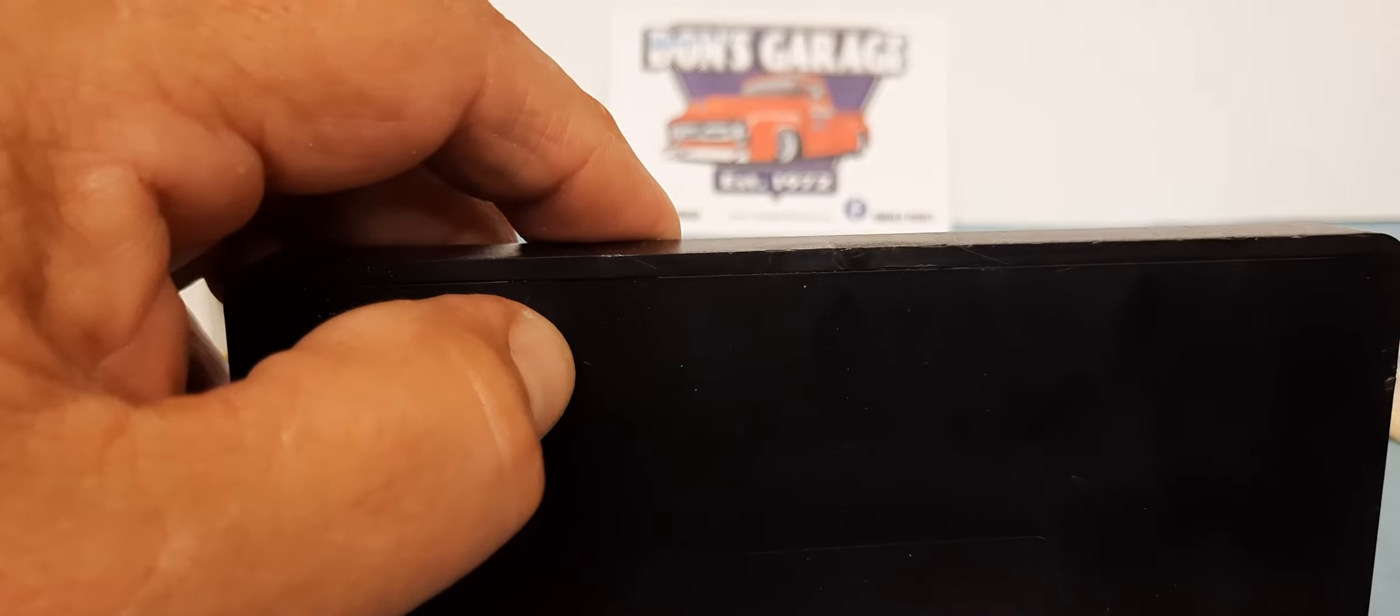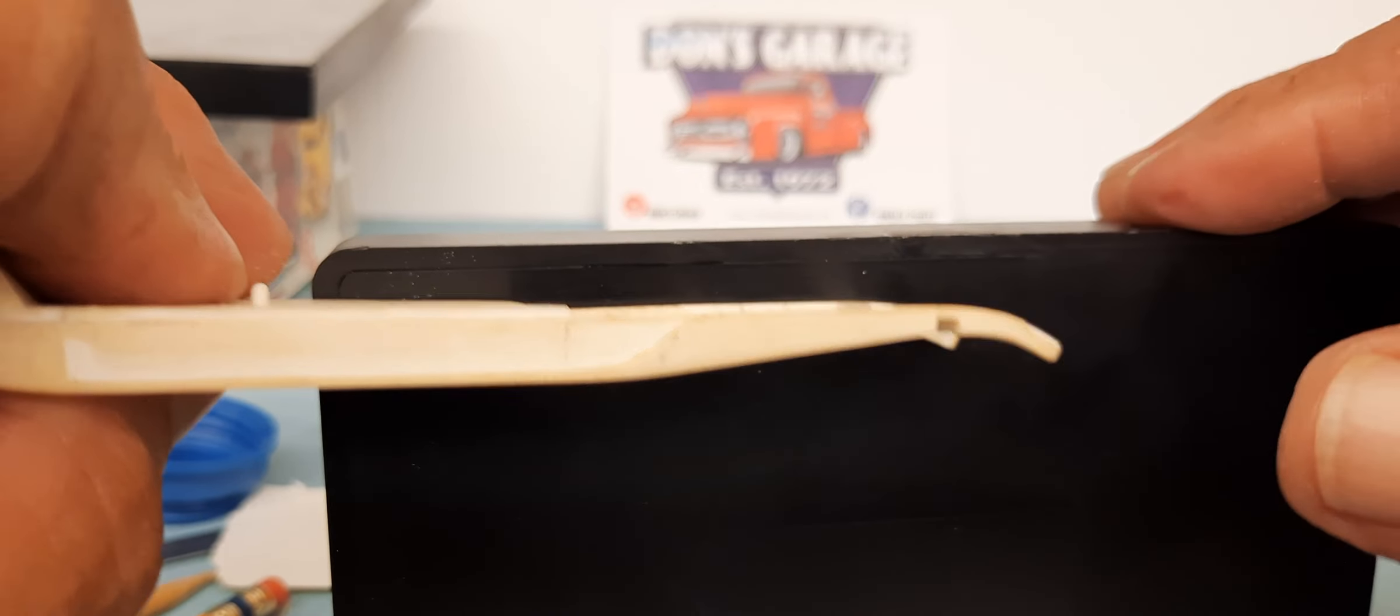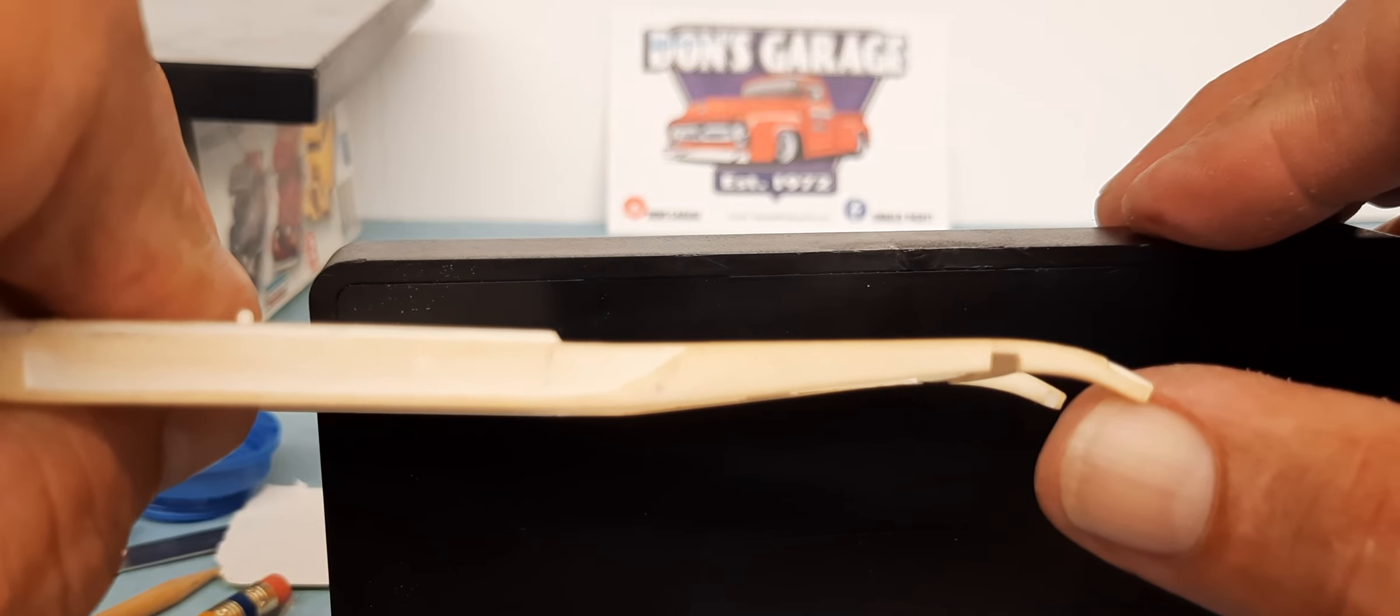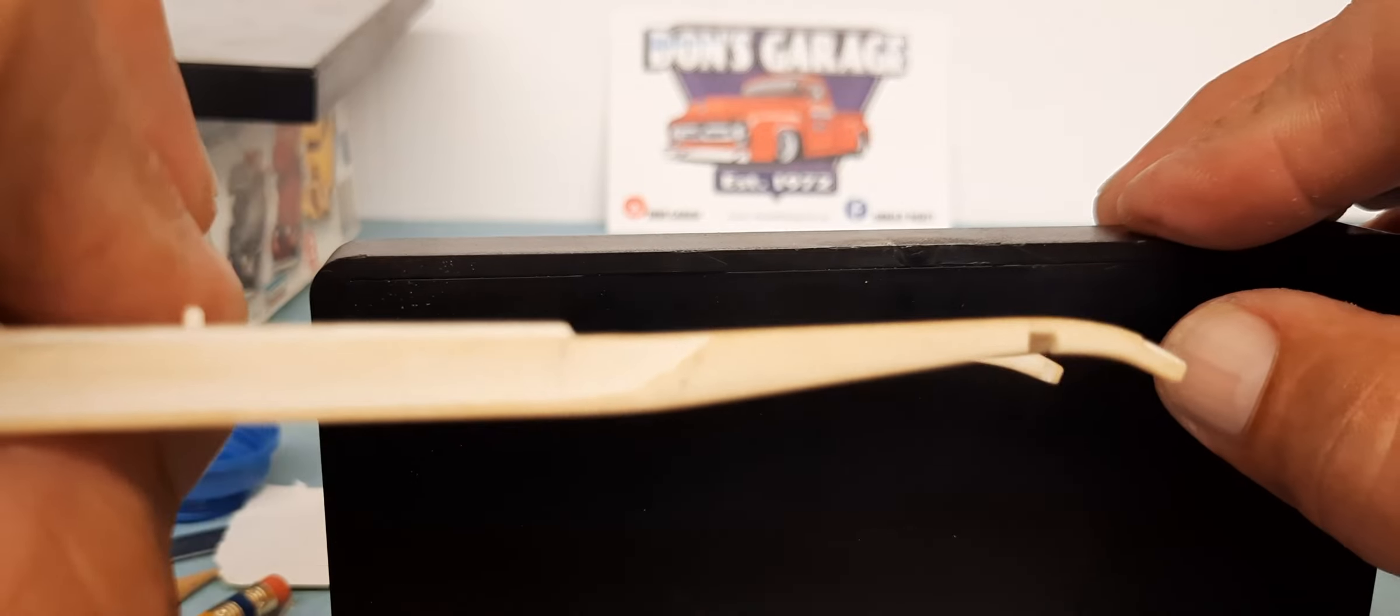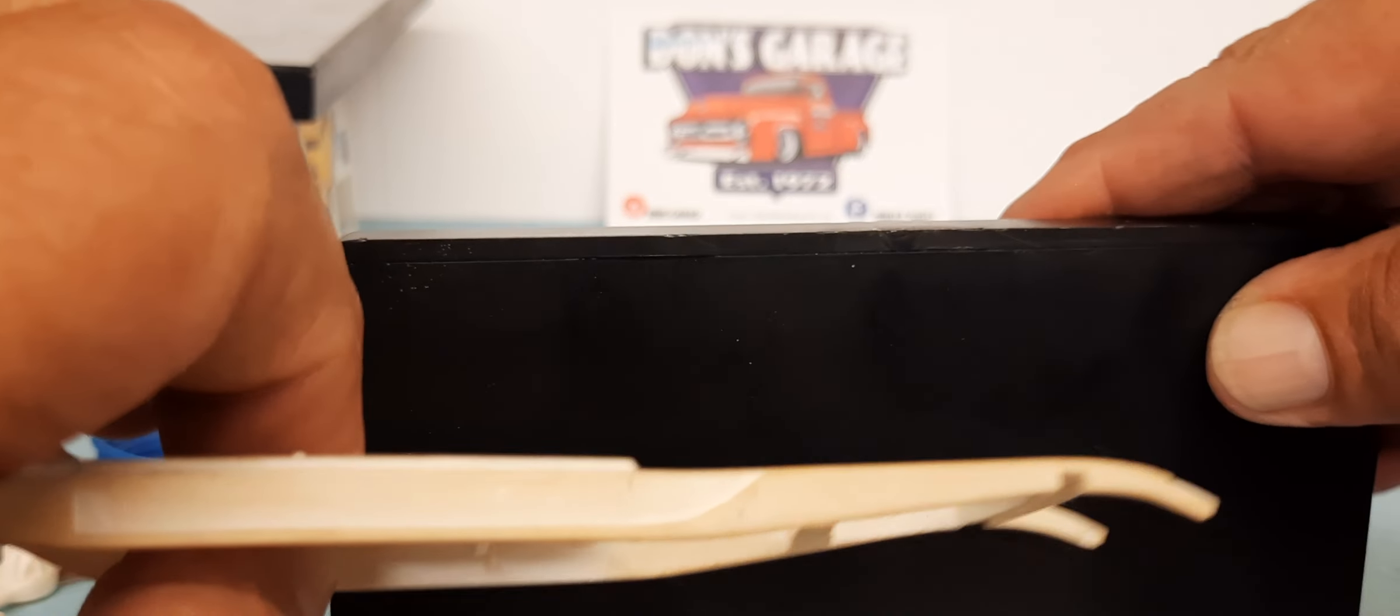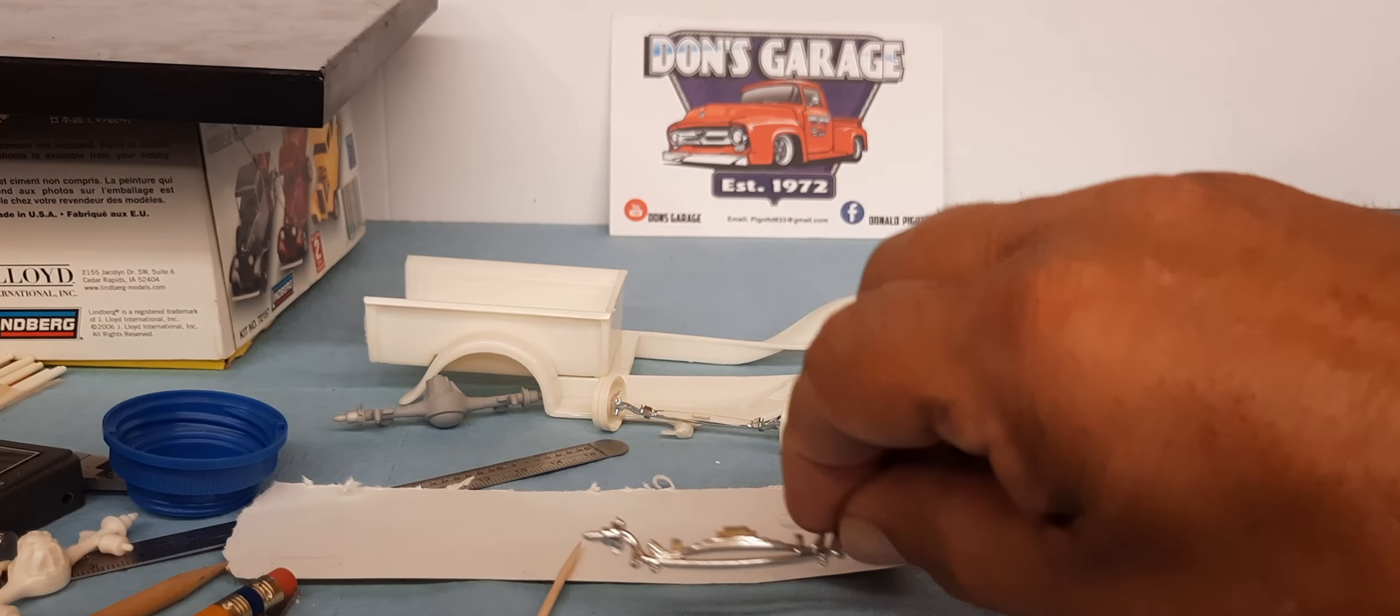Here's a slightly modified 32 Ford frame from the Revell kit. Now here I've notched it, that's for the single leaf buggy spring to get it down in the weeds. Now we're going to use this one because I don't really have another chassis that I can readily use for demonstration but this will work.